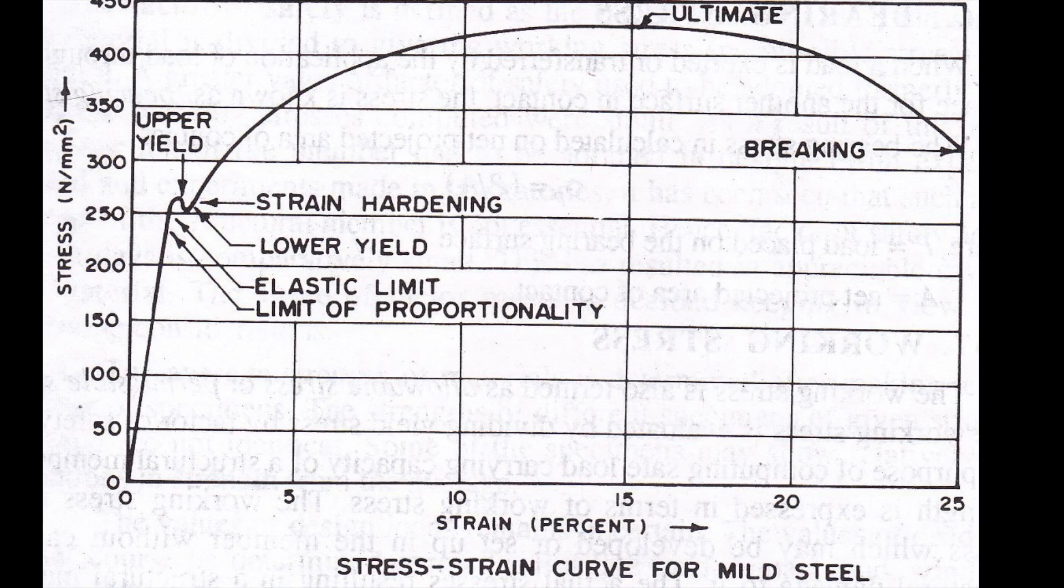On successful completion of the test, you'll see a graph like this on the machine's display. The first linear section is the elastic region, followed by a yield, and finally the curvy section is the plastic region and fracture. For a full explanation of this, watch our stress-strain curve video tutorial, which is linked above.